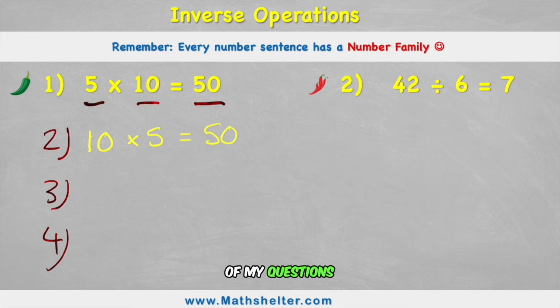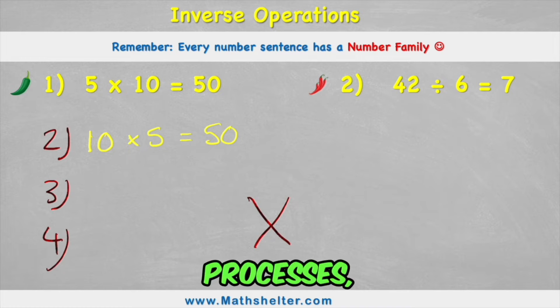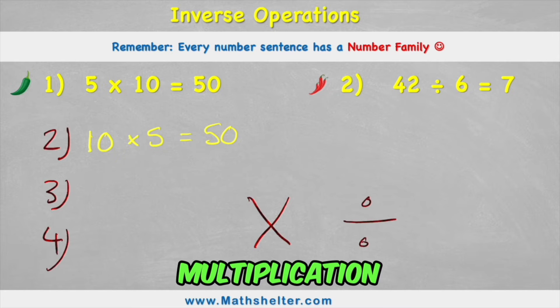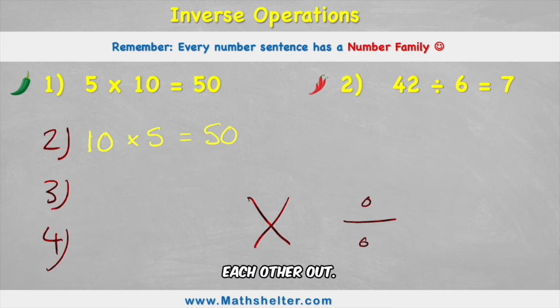But so far both of my questions have used multiplication. Well multiplication has a very special link to another of the processes, division. Multiplication and division are best friends. Because a multiplication and division question can cancel each other out. And therefore they can show the inverse operations. Let's see what I mean.